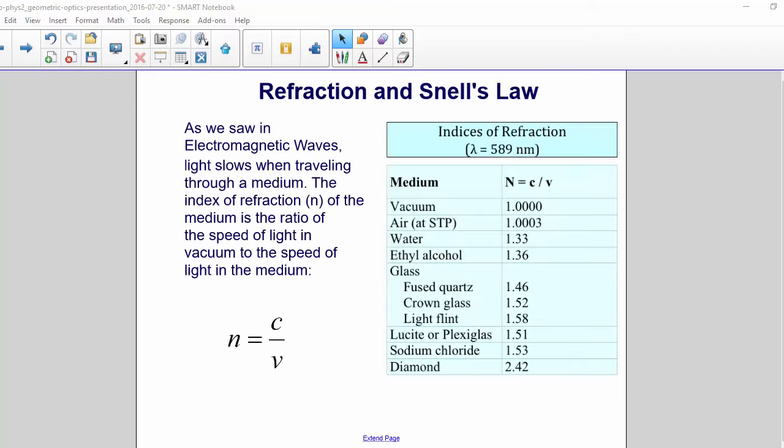Refraction and Snell's Law. As we saw in EM waves, light slows when traveling through a medium. The index of refraction of the medium is the ratio of the speed of light in a vacuum to the speed of light in the medium.